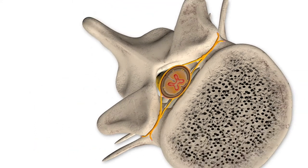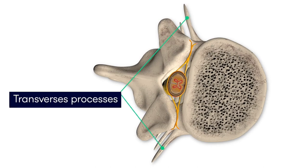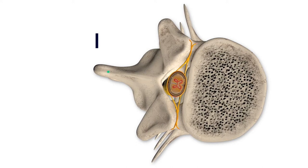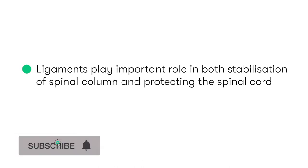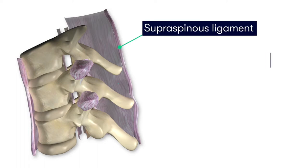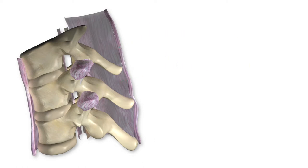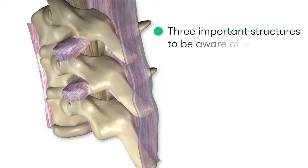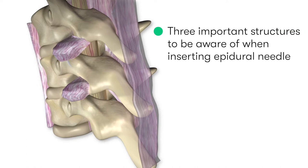The other key parts of the vertebra to be aware of are the paired transverse processes, which project laterally either side of the bony arch that forms the spinal canal, and the spinous process, which is the posterior projecting component of the vertebral column, which can be palpated when feeling along the midline of the patient's back and neck. Ligaments play an important role in both the stabilization of the spinal column and protecting the spinal cord. Particularly important are the supraspinous and interspinous ligaments, which connect adjacent spinous processes, and the ligamentum flavum, which connects the ventral parts of the laminae of adjacent vertebrae and helps form the wall of the spinal canal — an important structure to pass through when inserting the epidural needle.